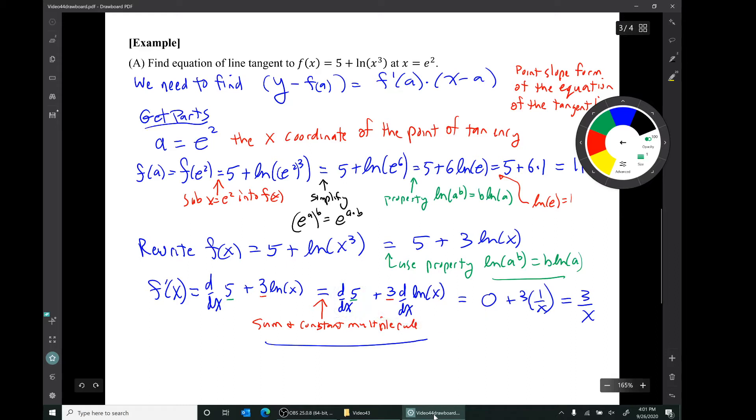When we take the derivative of 5, it's a constant function. Its derivative turns out to be 0, of course. When we take the derivative of ln(x), we use rule number 1 and we get 1/x. Again, ln(x) is not the same as 1/x. It's the derivative of ln(x) that's equal to 1/x.